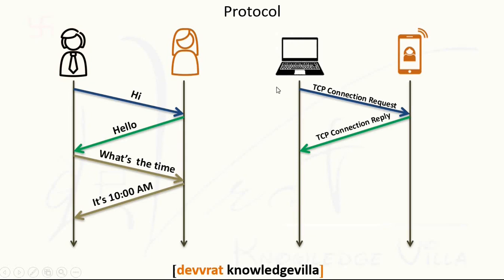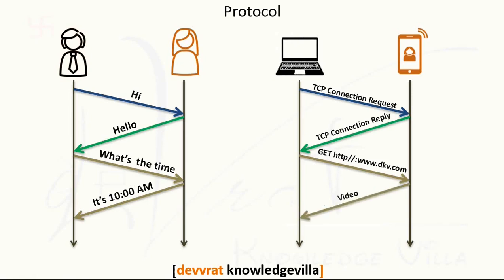Suppose this device wants to access any video file from the web. That device will make a request using the GET method. The GET method is used to get data. The other device will then reply with the video file — whether it's an audio file, video file, or any type of data file. So these are the trends in communication between devices in terms of computer networks.